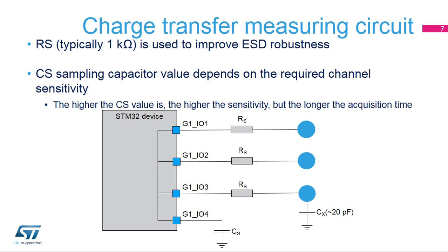Once the charge is transferred, the voltage on CS, called VCS, is read. If the voltage is lower than VIH, a logical 0 is returned. If it is greater than VIH, a logical 1 is read. If the returned logical value is 0, steps 3 to 7 are repeated. After each charge transfer loop, a counter is incremented, representing the capacitance of the sensor.